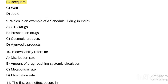Next question. Which is an example of a Schedule H drug in India? Option A, OTC drugs. Option B, prescription drugs. Option C, cosmetic products. Option D, ayurvedic products. Answer: Schedule H means prescription drugs.